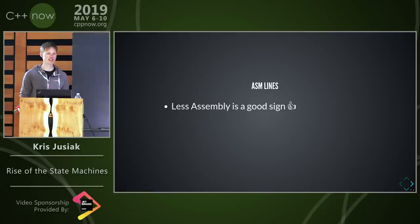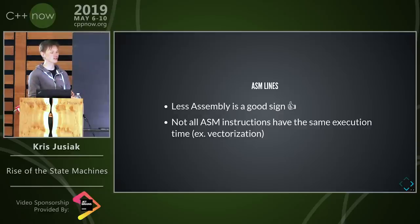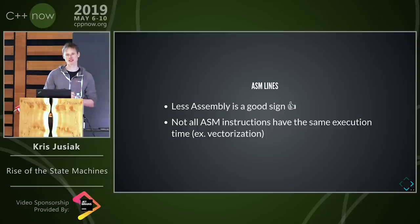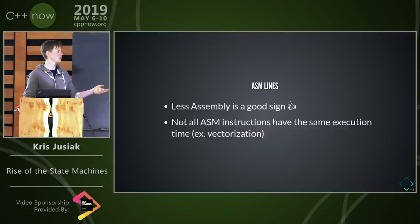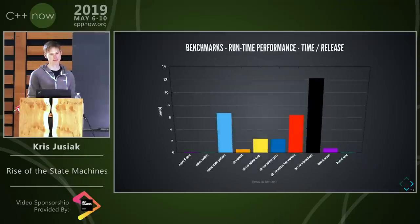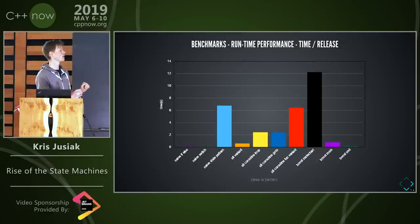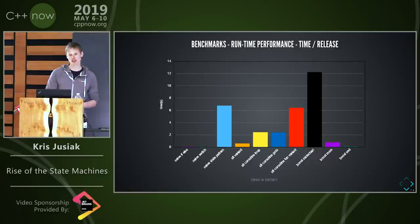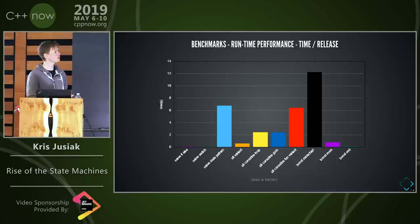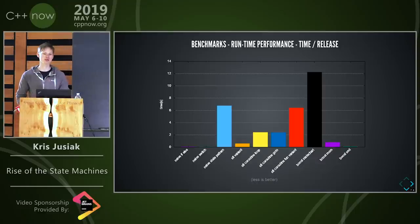What about runtime performance — that's the main thing we want to compare. The inline versions are basically the same: very fast. MSM, although it generated more assembly lines, is much faster than some other solutions because of the jump table — at runtime it doesn't have to do a lot. State chart is slow — kind of expected. Every solution that has heap allocations in the hot path won't be fast. We also see that coroutines